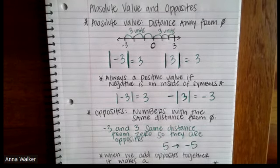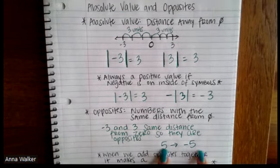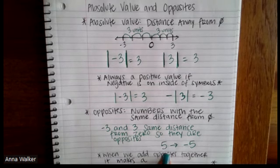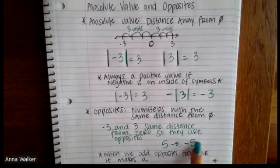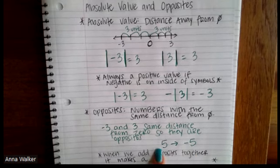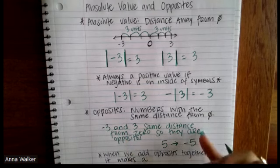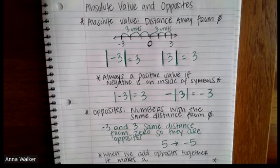You'll notice it kind of has to do with the symbols — the opposite is kind of like the opposite sign of whatever the number is. So the opposite of positive five is negative five. The opposite of negative five is positive five. The opposite of negative three is positive three, and so forth. But the technical definition is they have the same distance away from zero.